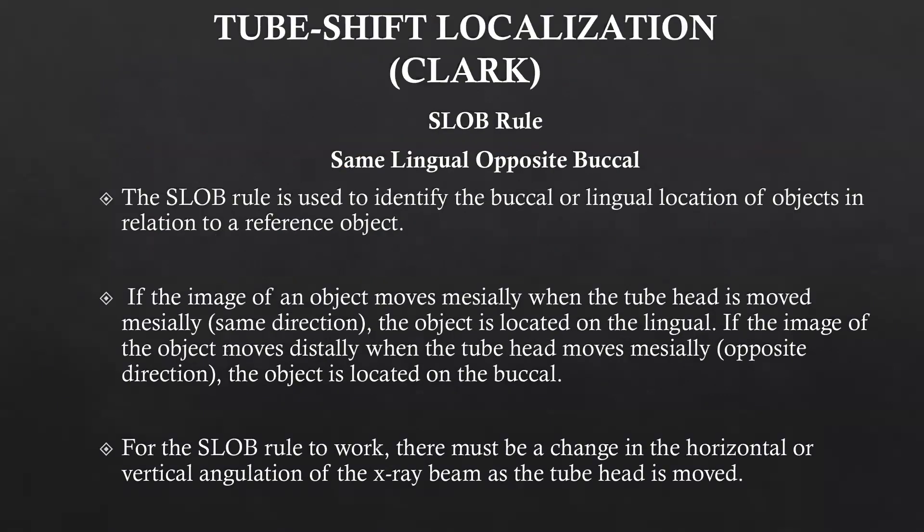The first technique is the tube shift localization, or Clark's technique, also called the SLOB rule — Same Lingual Opposite Buccal. It employs the principle of parallax to identify the buccal or lingual location of an object in relation to a reference object. If the image of the object moves mesially when the tube head is moved mesially — that is in the same direction — the object is located on the lingual aspect. If the image moves distally when the tube head is moved mesially — that is in the opposite direction — the object is located on the buccal aspect.